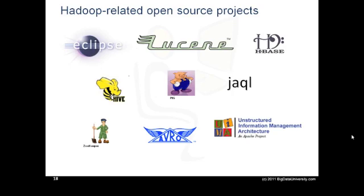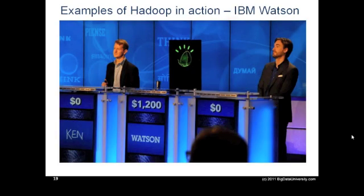Let's now talk about examples of Hadoop in action. Early in 2011, Watson, a supercomputer developed by IBM, competed in the popular question and answer show Jeopardy. Watson was successful in beating the two most popular players in that game. It was input approximately 200 million pages of text, using Hadoop to distribute the workload for loading this information into memory. Once the information was loaded, Watson used other technologies for advanced search and analysis.